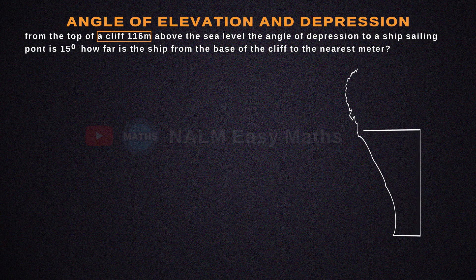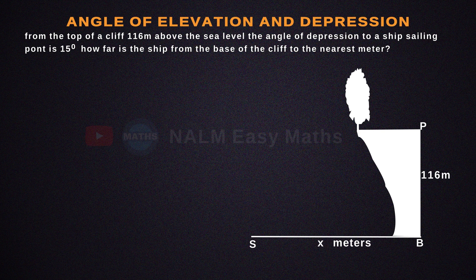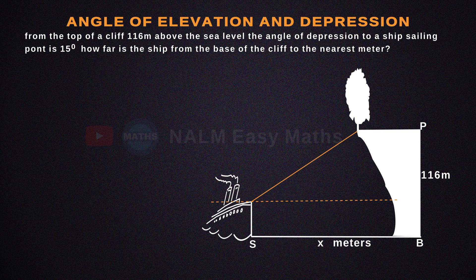From the top of a cliff 116 meters above sea level, the angle of depression to a ship's sailing point is 15 degrees. How far is the ship from the base of the cliff to the nearest meter?